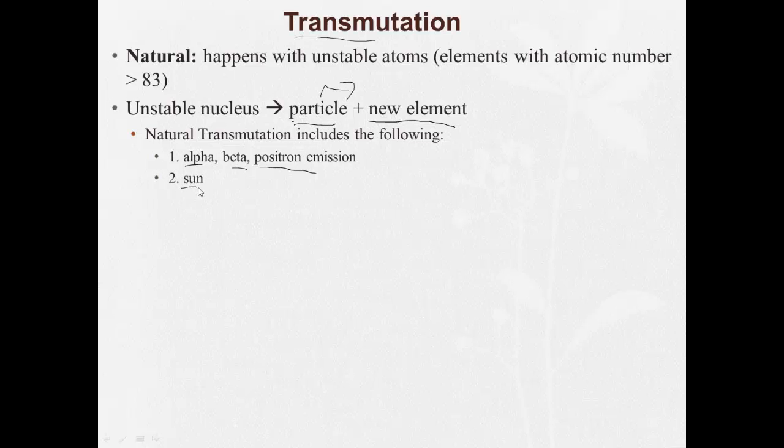Natural transmutation happens in the sun. That's a fusion reaction, which we're going to talk more about in a little bit. And then sometimes very large elements undergo electron capture, where one of the inner electrons move into the nucleus combined with a proton, and a proton turns into a neutron. And some energy, gamma rays, x-rays, neutrinos, and the like, are given off.